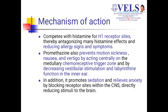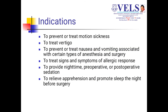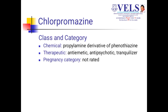Mechanism of action: promethazine acts on H1 receptors and reduces allergy signs and symptoms. It also prevents motion sickness, nausea, and vertigo by acting centrally on the CTZ. It balances the imbalance in vestibular stimulation and labyrinthine function in the inner ear. It also promotes sedation and relieves anxiety by blocking receptor sites in the CNS. Indications: motion sickness, vertigo, nausea and vomiting associated with anesthesia and surgery, allergic responses, and pre-operative and post-operative sedation.